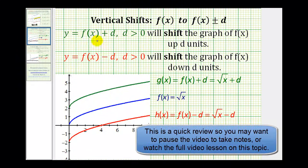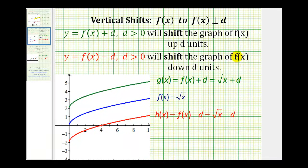If y = f(x) + d and d is positive, the shift will be up d units. If y = f(x) − d where d is positive, the shift will be down d units. So if we have our parent function and the new function is g(x) = √x + d, this shifts the parent function up d units. If the new function is √x − d, the shift is down d units. So if the constant is outside the square root, we'll have a shift up or down.